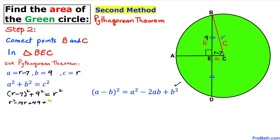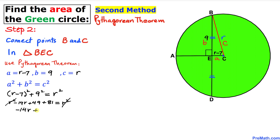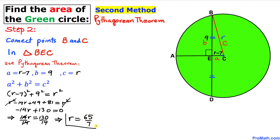Adding 81 for the 9 squared term, we get R squared minus 14R plus 49 plus 81 equals R squared. The R squared terms cancel, leaving negative 14R plus 130 equals 0, so 14R equals 130. Dividing both sides by 14, the radius R equals 65 over 7.